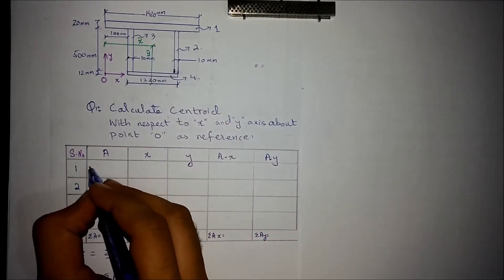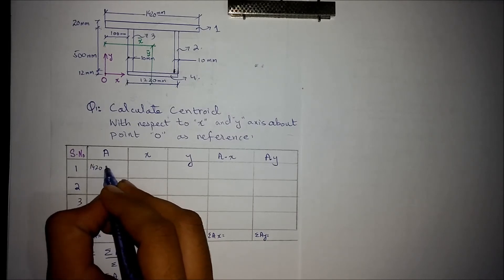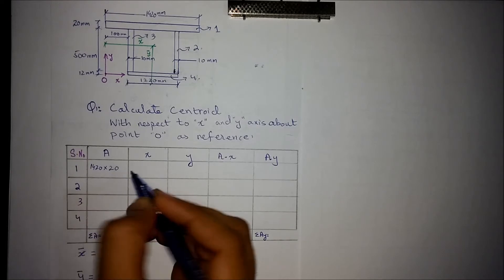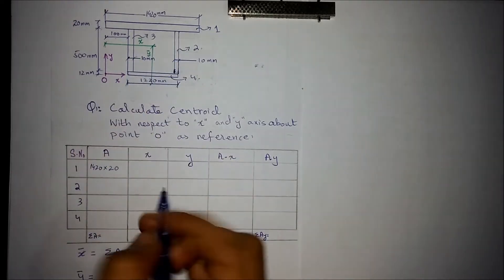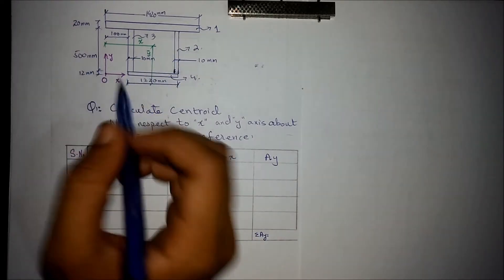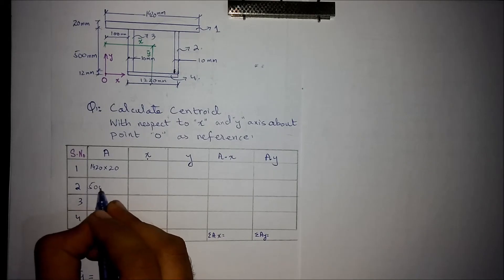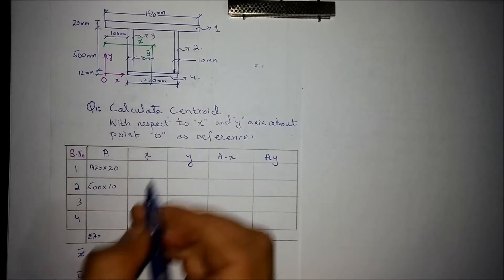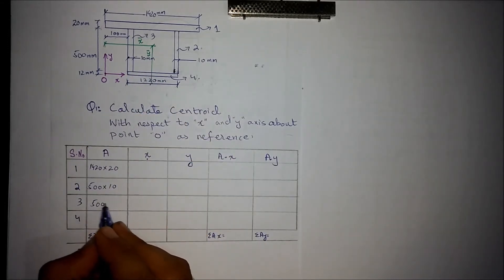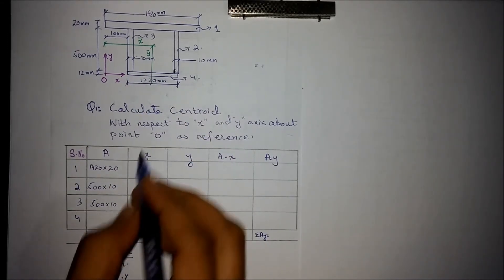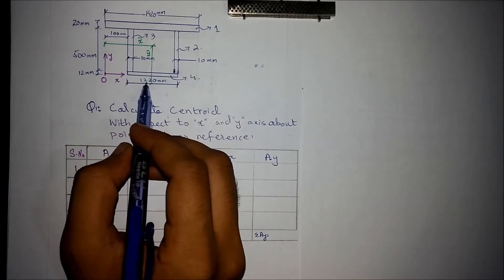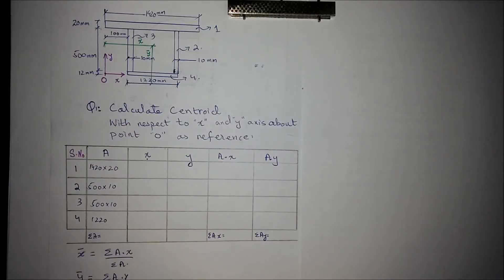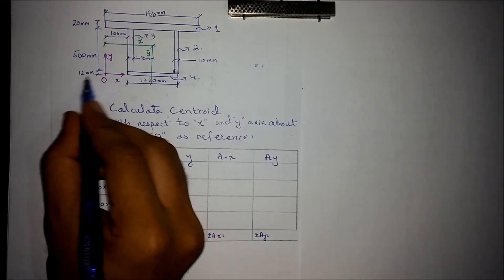The area of the first shape is 1420 multiplied by 20 mm. The area of the second shape is 500 multiplied by 10 mm (height 500 mm, thickness 10 mm). The area of the third shape is similarly 500 times 10 mm. And the area of the fourth shape is 1220 multiplied by the thickness, which is 12 mm.